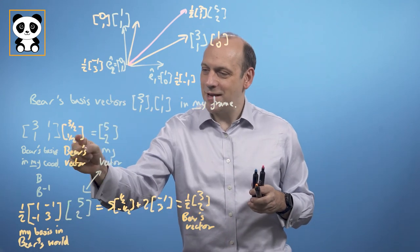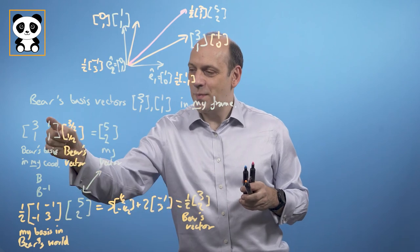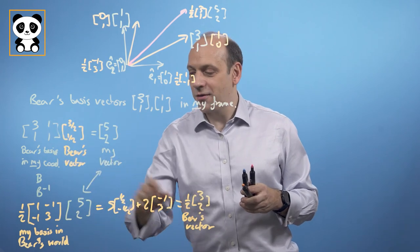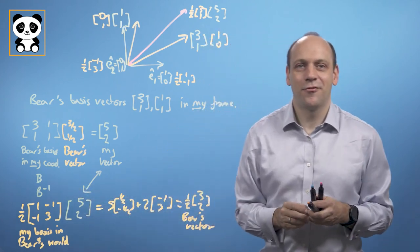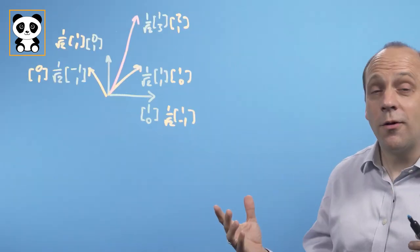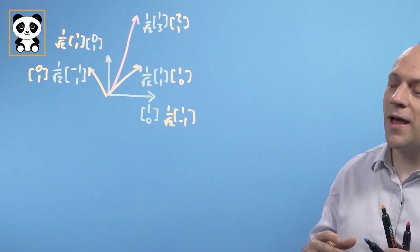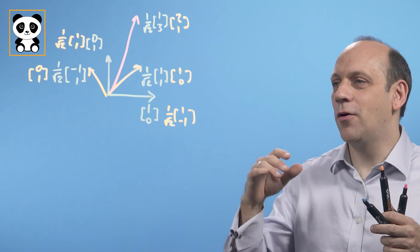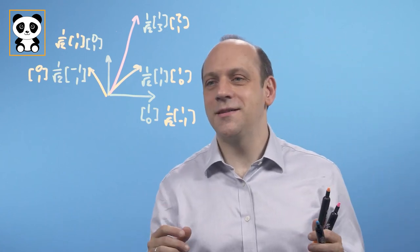So that's how you do the reverse process. If you want to take Bear's vector into my world, you need Bear's basis in my coordinate frame. And if you want to do the reverse, you want my basis in Bear's coordinate frame — that's probably quite counter-intuitive. So let's try another example where this time Bear's world is going to be an orthonormal basis vector set.